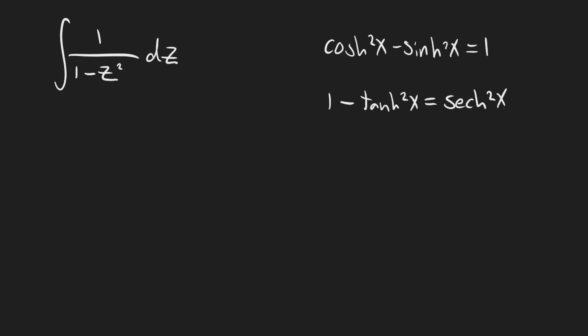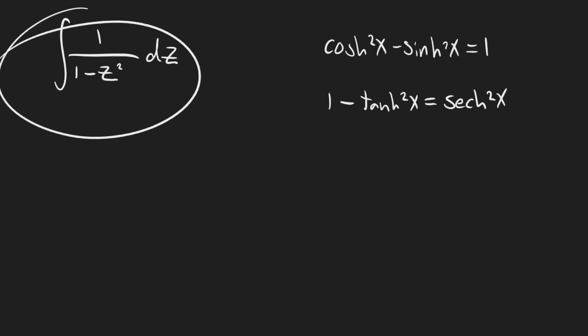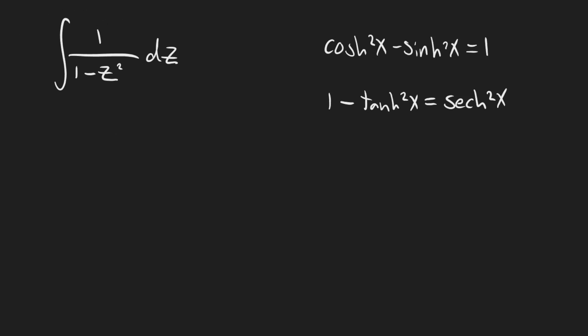Now maybe I can tell you exactly why this equation is so important. If you take a look at our integral, the denominator is one minus z squared. This equation is in the form of one minus a variable squared. Because we see a one minus here and a one minus there, what would happen if we set z equal to tanh? Then the denominator would totally satisfy this property — we could rewrite the denominator as sech squared of x. And it ends up that it really does help.